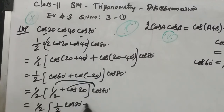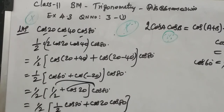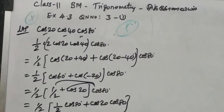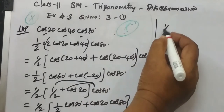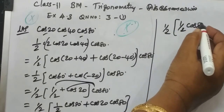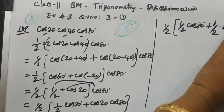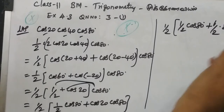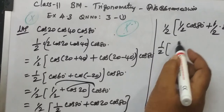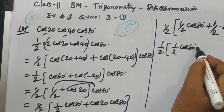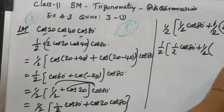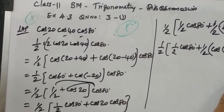Cos 80, then cos 20 cos 80, equal to 1 by 2. Here 1 by 2 cos 80. Again multiply and divide by 2, because 2 cos A cos B — 2 is equal to 2. So multiply and divide by 2. Here cos 20 then cos 80. Here 1 by 2 cos 80, then plus 1 by 2. Here 2 cos A cos B — again the 2 cos A cos B formula: cos(A+B) plus cos(A-B).